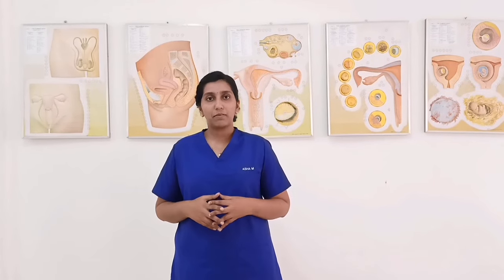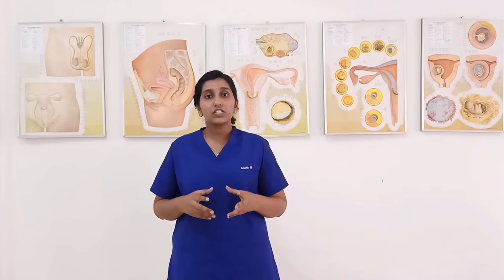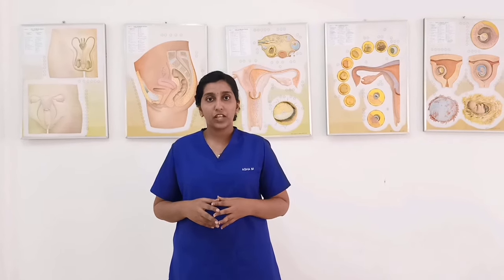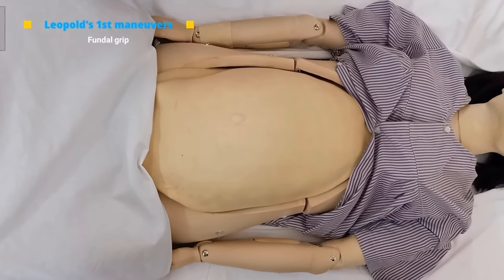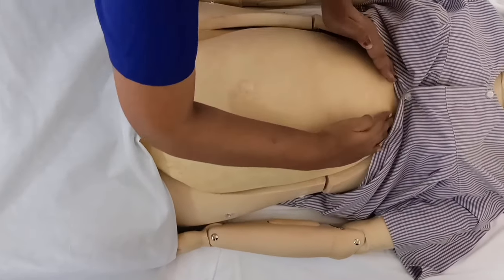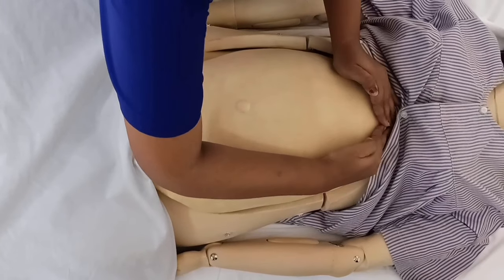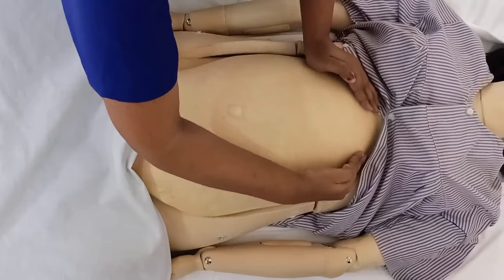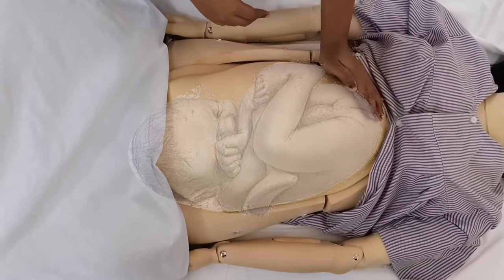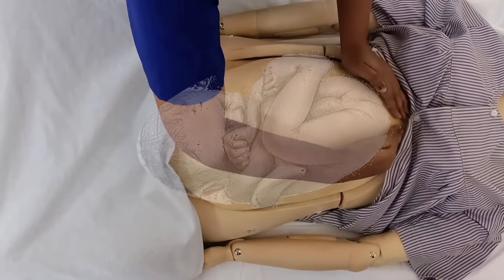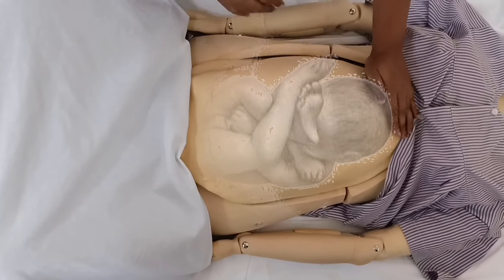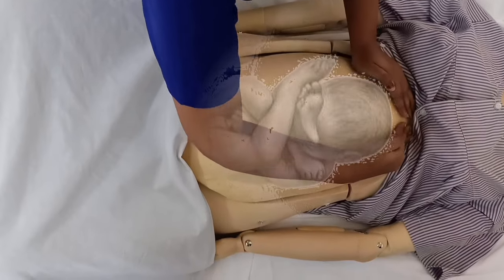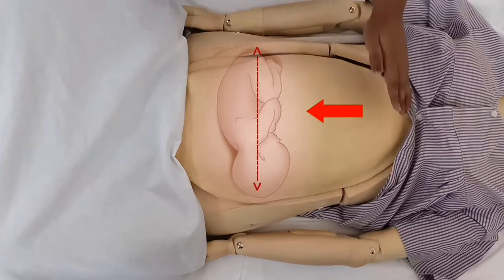Let us now begin with abdominal palpation. Abdominal examination is conducted systematically by employing all four maneuvers described by Leopold. For the first three maneuvers, the examiner faces the mother's face; for the fourth maneuver, the examiner faces the patient's feet. Leopold's first maneuver, also known as fundal grip: the fundus is palpated with both hands to identify the fetal form occupying the uterine fundus. In cephalic presentation, the buttocks are felt at the fundus as large, soft, irregular, nodular, and non-ballottable. In breech presentation, the head is felt at the fundus as hard, smooth, round, compact, mobile, and ballottable. In transverse lie, the grip is empty.